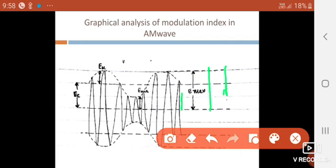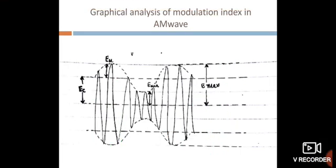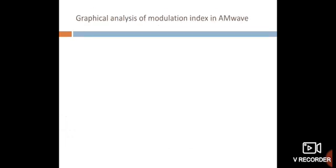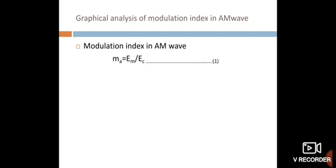From the figure, Ec = Emax − Em. The modulation index in amplitude modulated wave: ma = Em / Ec, defined as the ratio of peak value of the information signal (modulating signal) to the peak value of the carrier signal.